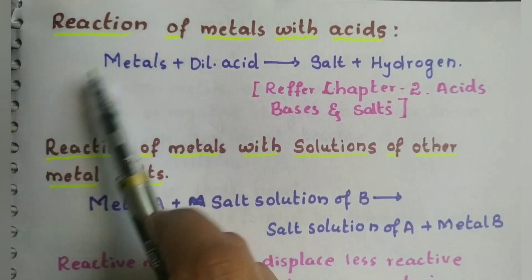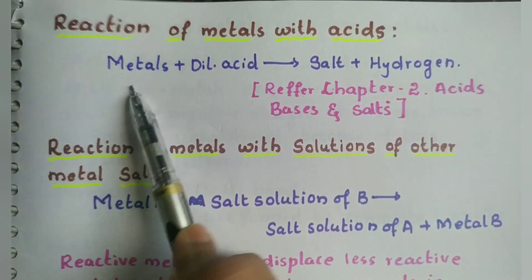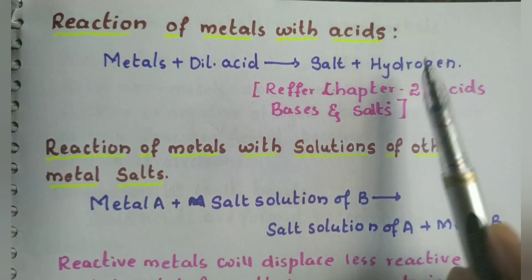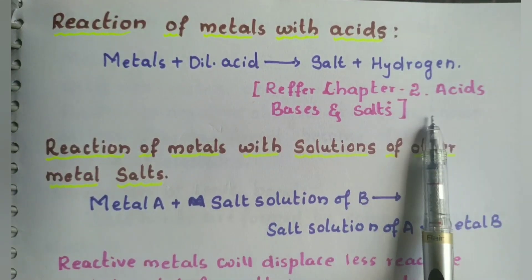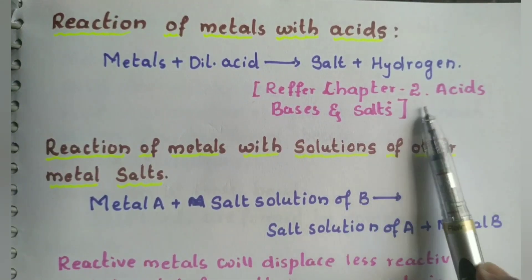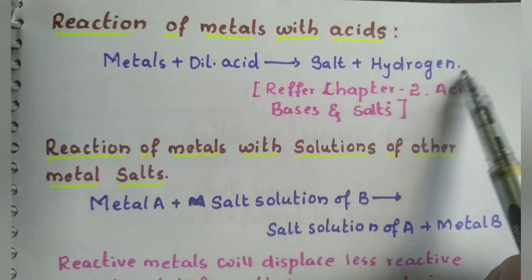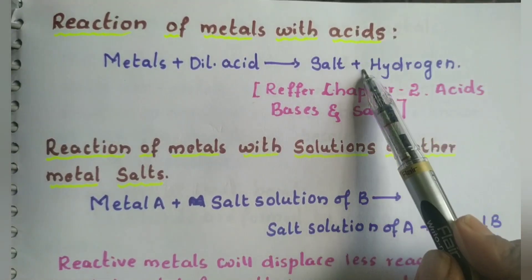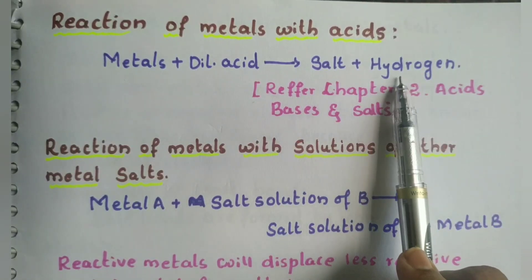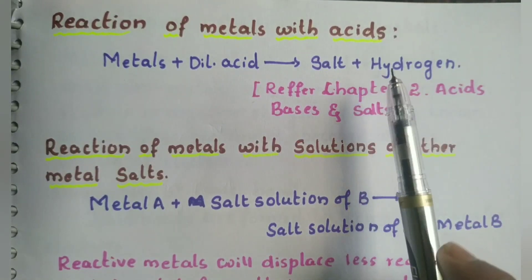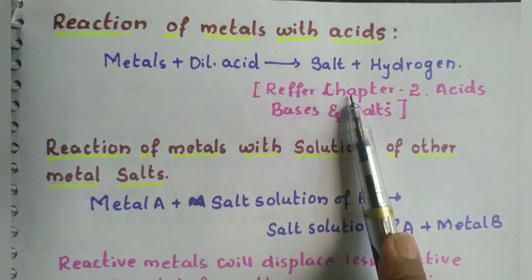Let us see how metals react with acids. Whenever a metal reacts with acids, they form salt and hydrogen gas is released. We have already discussed this in Chapter 2 — acids and bases — and we have also seen how to do a confirmation test for hydrogen. If you have not watched that lesson, please watch the link provided in the description box.